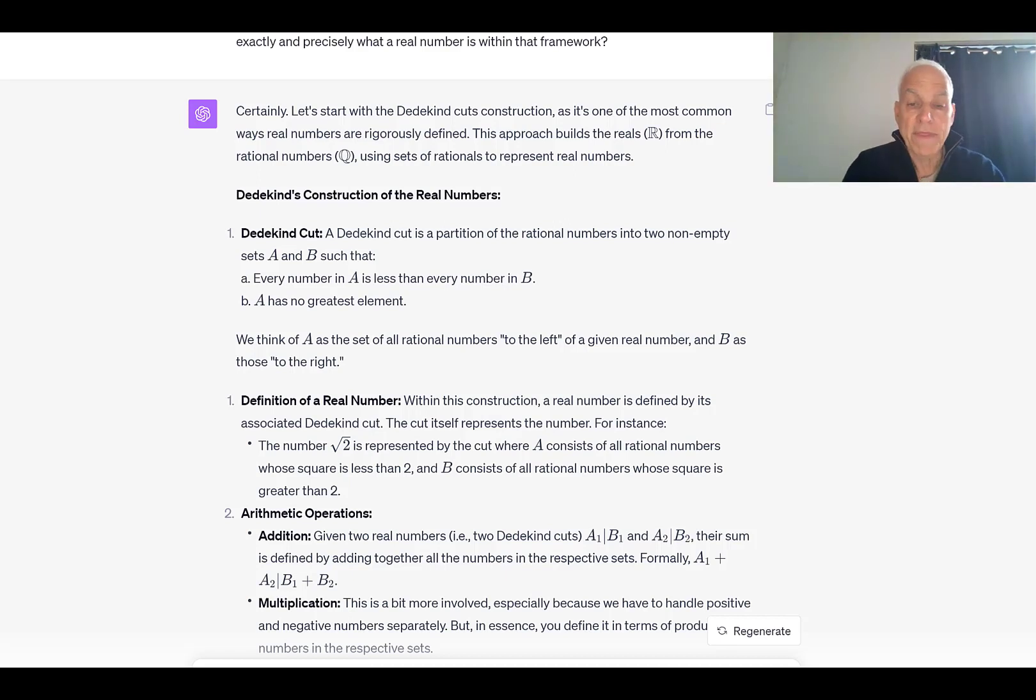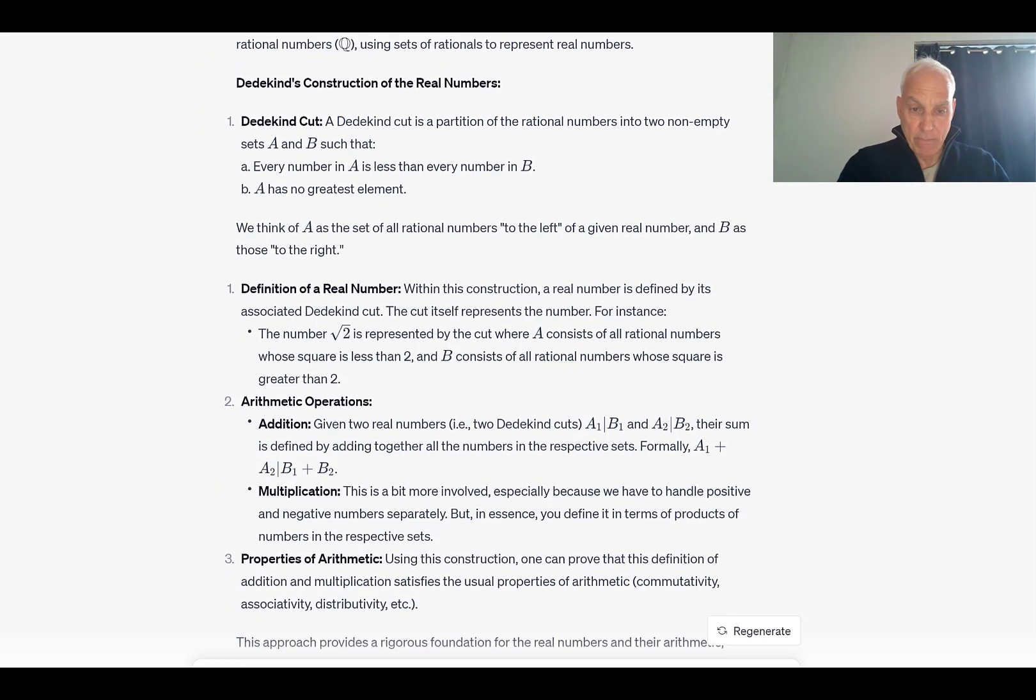Definition of a real number: Within this construction, a real number is defined by its associated Dedekind cut. The cut itself represents the number. For instance, the number root two is represented by the cut where A consists of all rational numbers whose square is less than two, and B consists of all rational numbers whose square is greater than two.